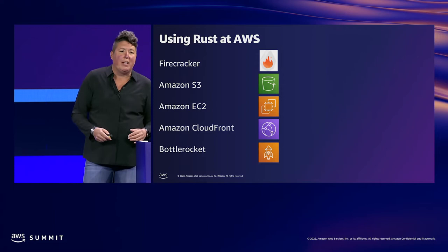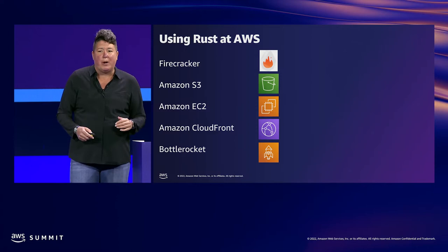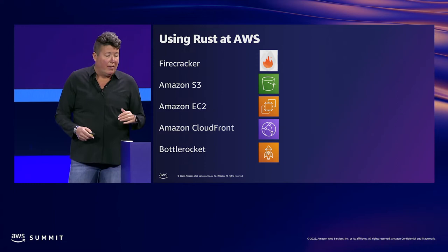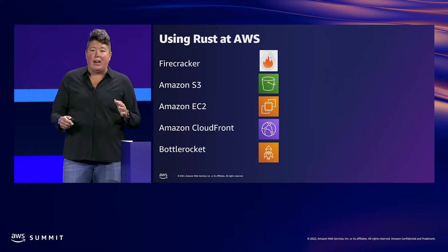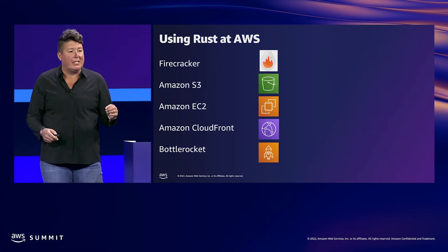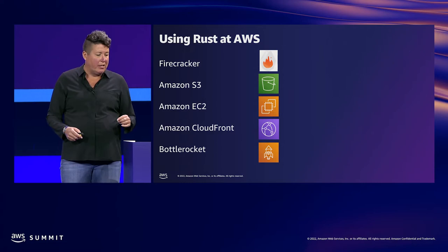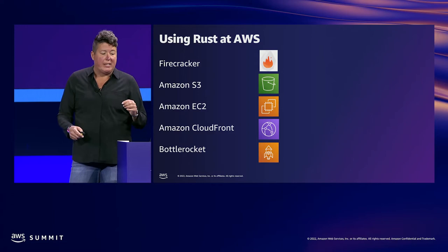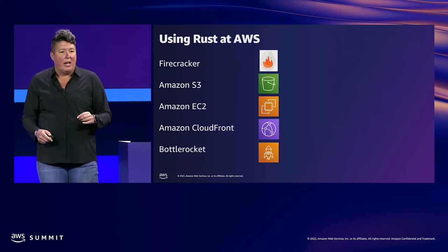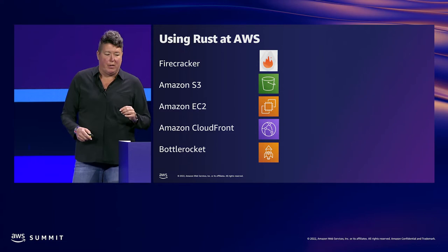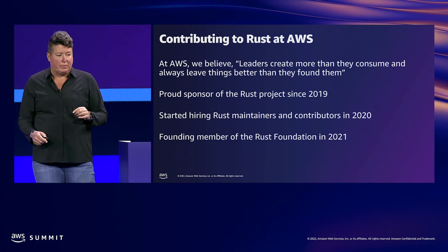At AWS, Rust has quickly become critical to building infrastructure at scale. Our first notable product written in Rust, Firecracker, launched publicly in 2018 — it's the open-source virtualization technology powering AWS Lambda and other serverless offerings. We use Rust to deliver services like Amazon S3, Amazon EC2, Amazon CloudFront, and many more. Last year we launched Bottlerocket, a Linux-based container operating system written in Rust. Our Amazon EC2 team uses Rust as their language of choice for AWS Nitro system components, including sensitive applications such as Nitro enclaves.